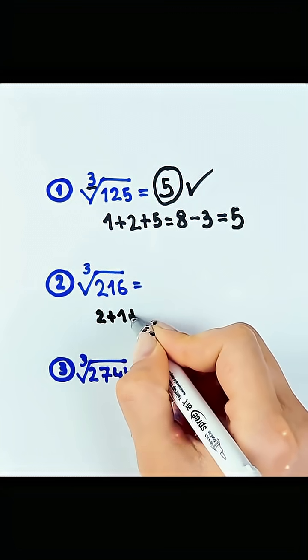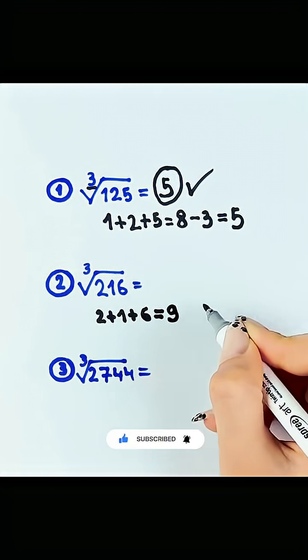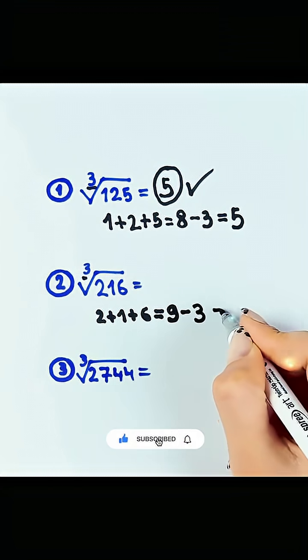Next, we have 2 plus 1 plus 6, which equals 9. Subtract 3, and you get 6.